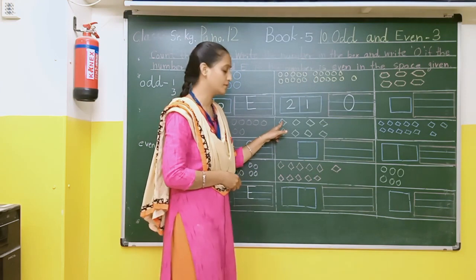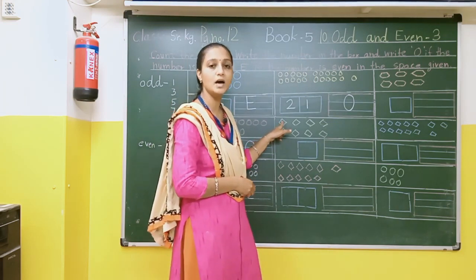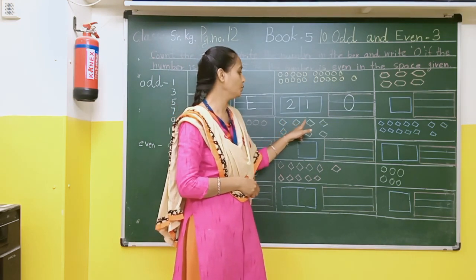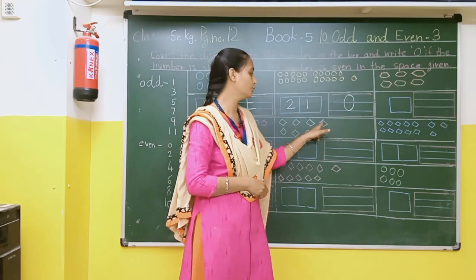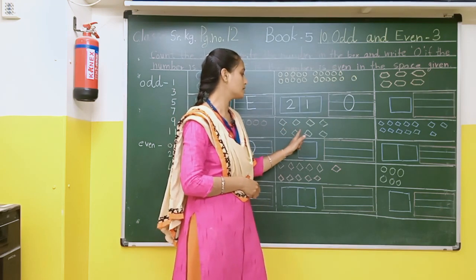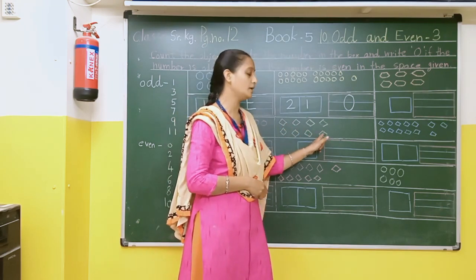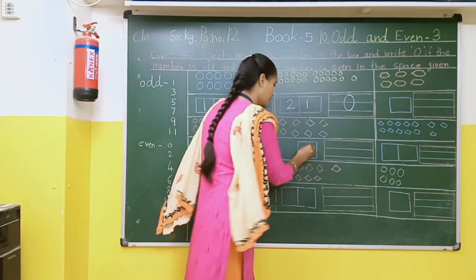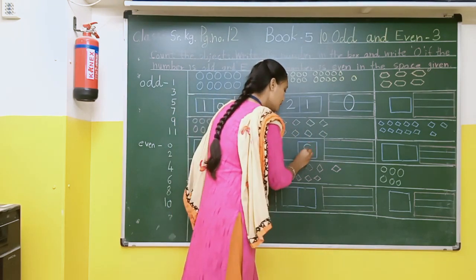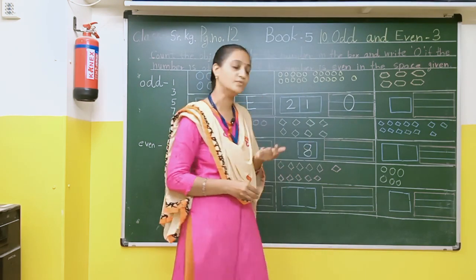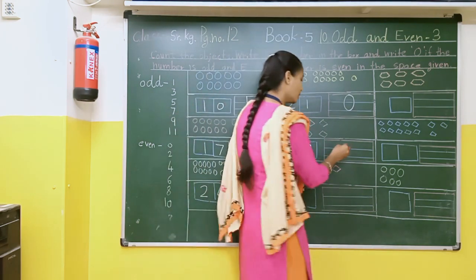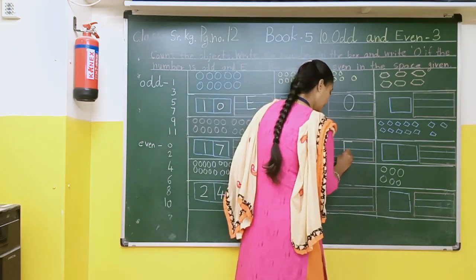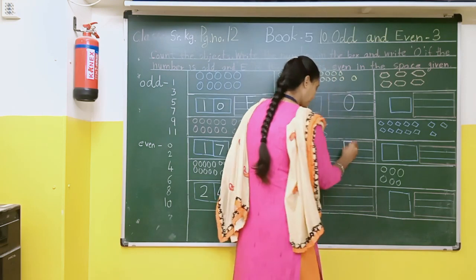Here the diamonds are 1, 2, 3, 4, 5, 6, 7, 8. So here we are going to write — 8 is even. So here we have to write capital E.